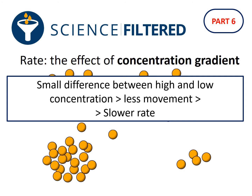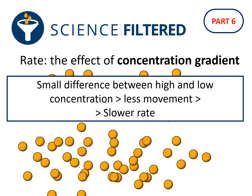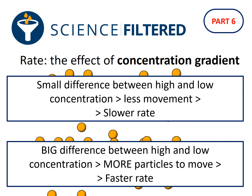On the other hand, if I've got a lot more particles on the left hand side — a really high concentration compared to a really low concentration on the right — then the diffusion rate is going to be a lot quicker. So if there's a big difference between a high and a low concentration, that means more particles are moving, giving a faster rate of diffusion.